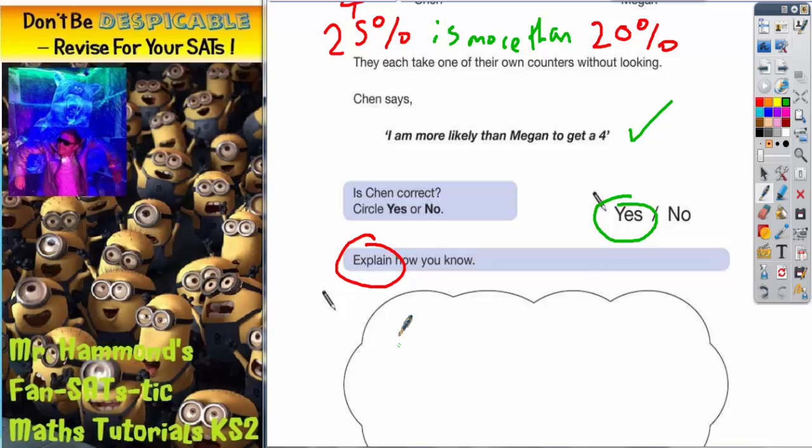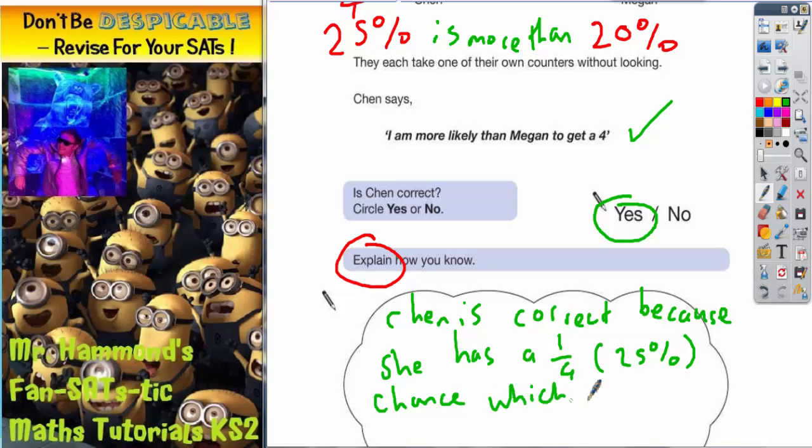And you would say Chen is correct because she has a 1 out of 4, 25% chance, which is bigger than 1 out of 5, which is 20%.